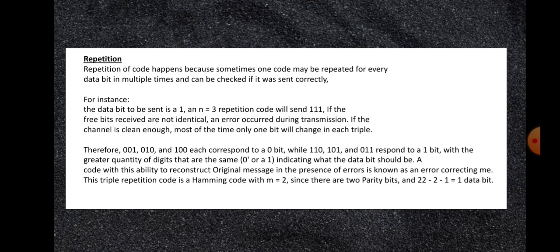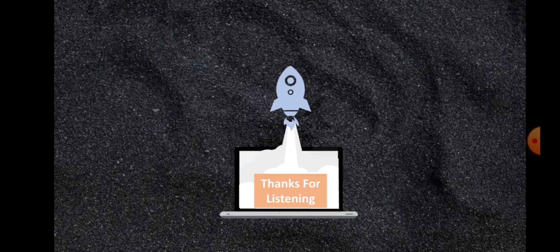This triple repetition code is a Hamming code with M=2, since there are 2 parity bits and 2^2 - 2 - 1 = 1 data bit. That would be all. Thanks for listening. Godspeed.